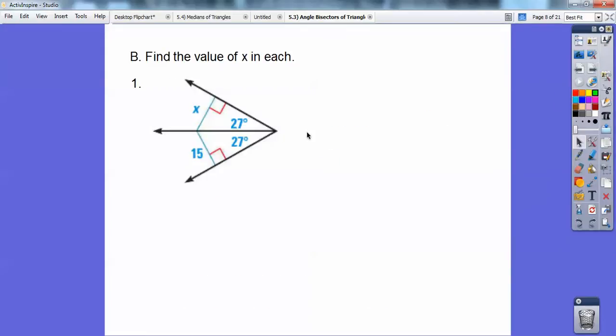Let's find the value of x right here. These two 27s tell me that this is the angle bisector, so that means this x and 15 are the same, so x equals 15. See, it's that easy. Are they all that easy? No, but pretty darn close.